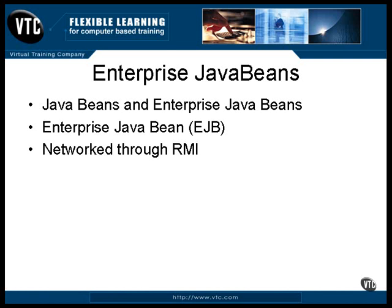One important aspect of an EJB is that the call to a method is a network operation. Internally, EJBs use RMI, which is the Java Standard Remote Method Interface. This way, you can call a method of the Bean from anywhere. Roughly, it works like this.